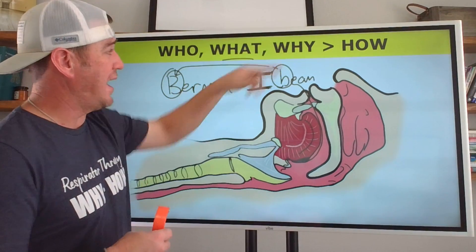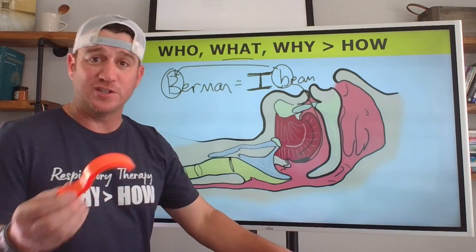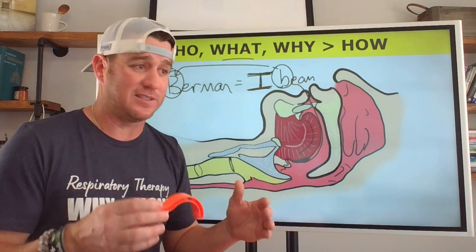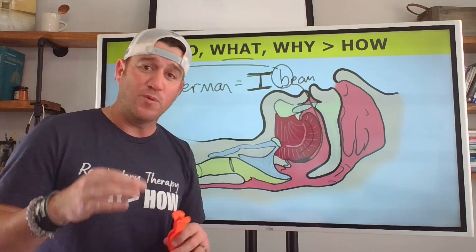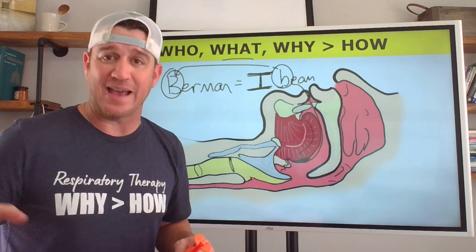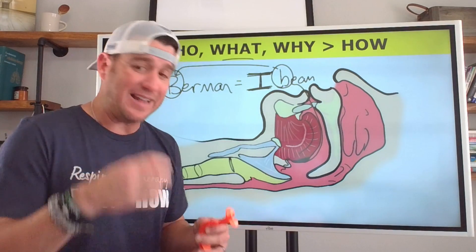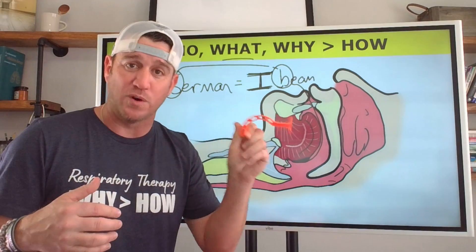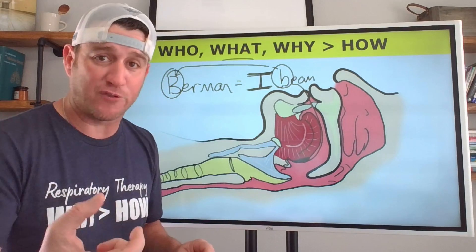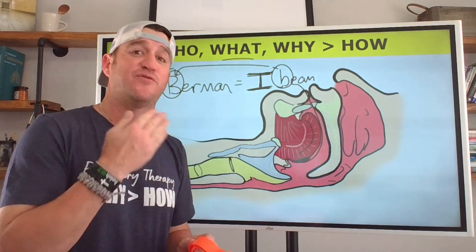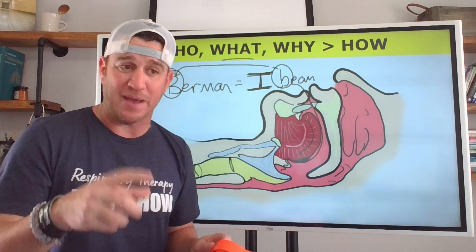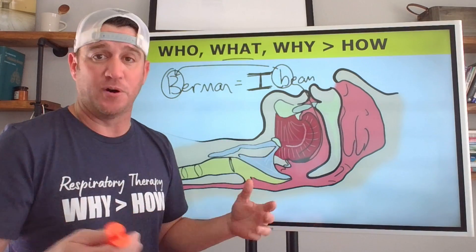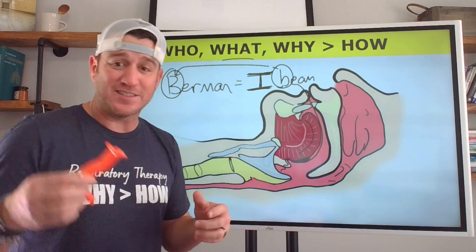The last thing to address is why we would want to use this device. The big overarching concept is that when we're trying to ventilate a patient, specifically with a bag valve mask device, the tongue can fall back and obstruct the airway. We utilize one of these devices to prevent that from happening — we need that tongue displaced forward so that when we squeeze the bag with a good seal on the mask, air is directed down toward the trachea and ultimately to the lungs.